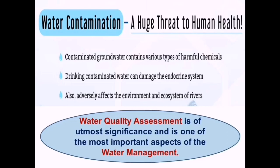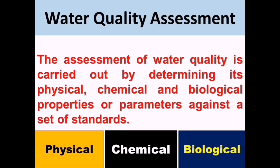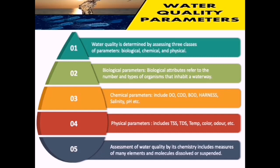For this reason, water quality assessment is of utmost importance and is one of the most important aspects of water management. This has attained significant global attention over the years in view of the growing concerns and awareness on environment and health related issues. The assessment of water quality is carried out by determining its physical, chemical and biological properties or parameters against a set of standards. In simple words, it includes the evaluation of the physical, chemical and microbiological state of water in relation with the natural state, anthropogenic effects and future uses, as shown in this slide. These three types of parameters are considered basic and given priorities in any water quality assessment program according to WHO guidelines.